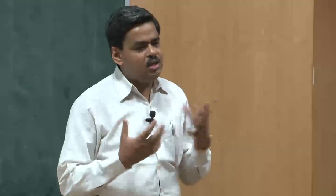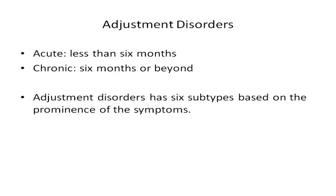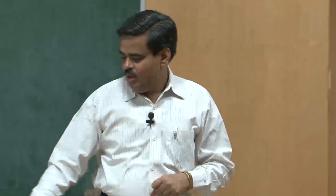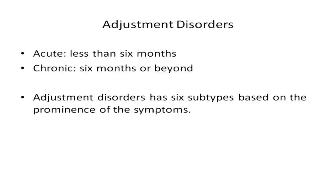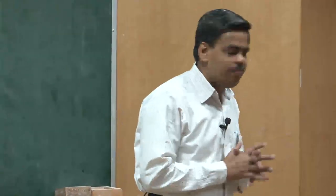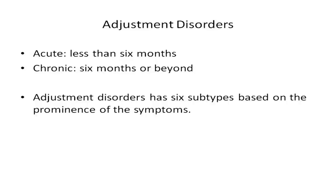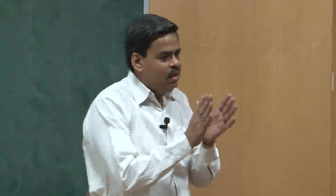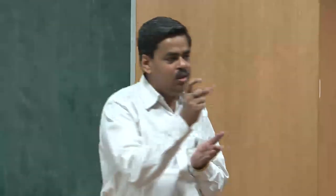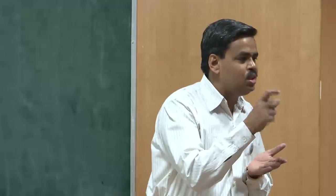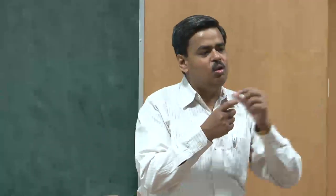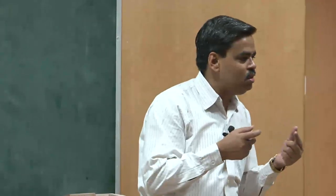Adjustment disorders are classified as acute or chronic, which is basically time-dependent. If the symptoms last less than six months, it is considered acute adjustment disorder. If the symptoms exceed six months, it is considered chronic adjustment disorder. As we saw, the behavioral and emotional changes should occur within three months after exposure to the stressor, and symptoms can persist for a maximum of six months after the stressor ends.